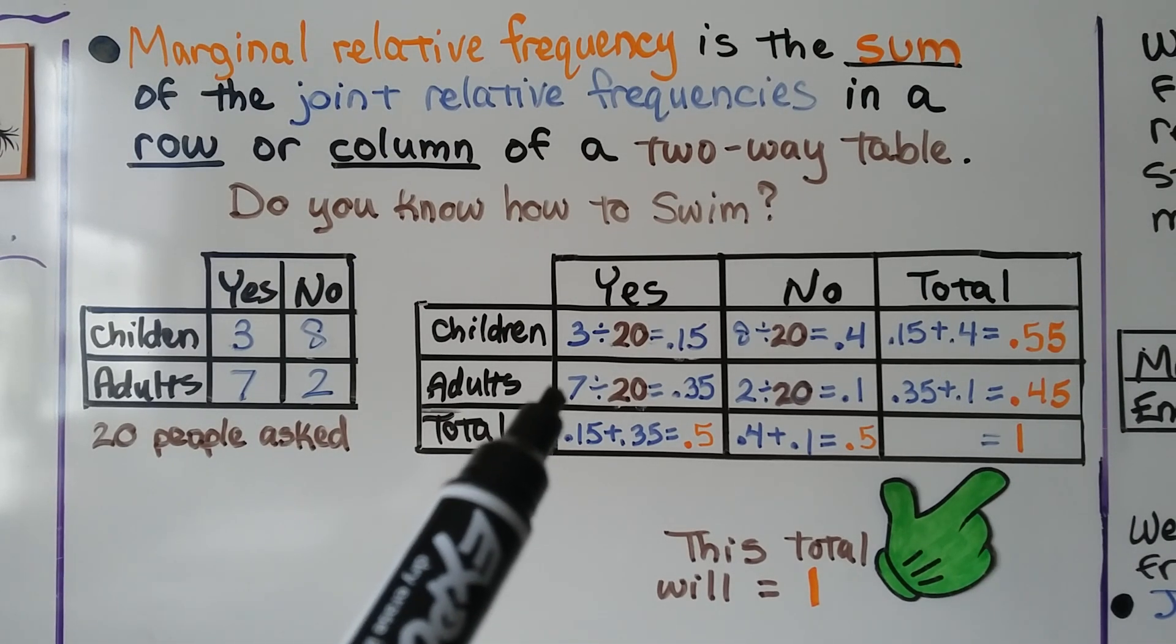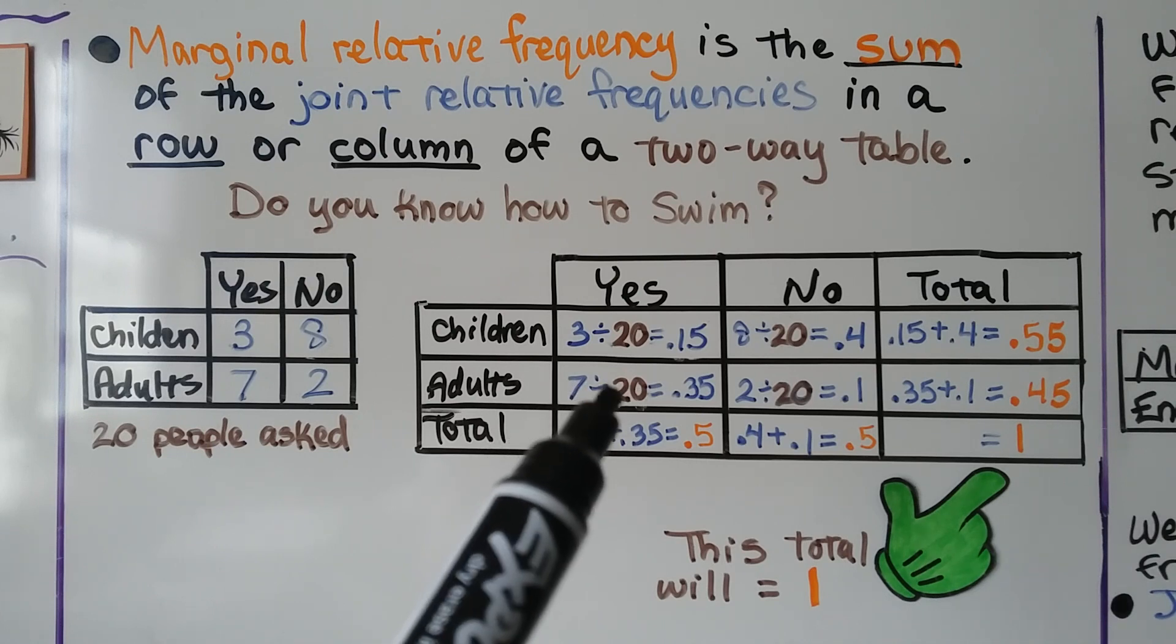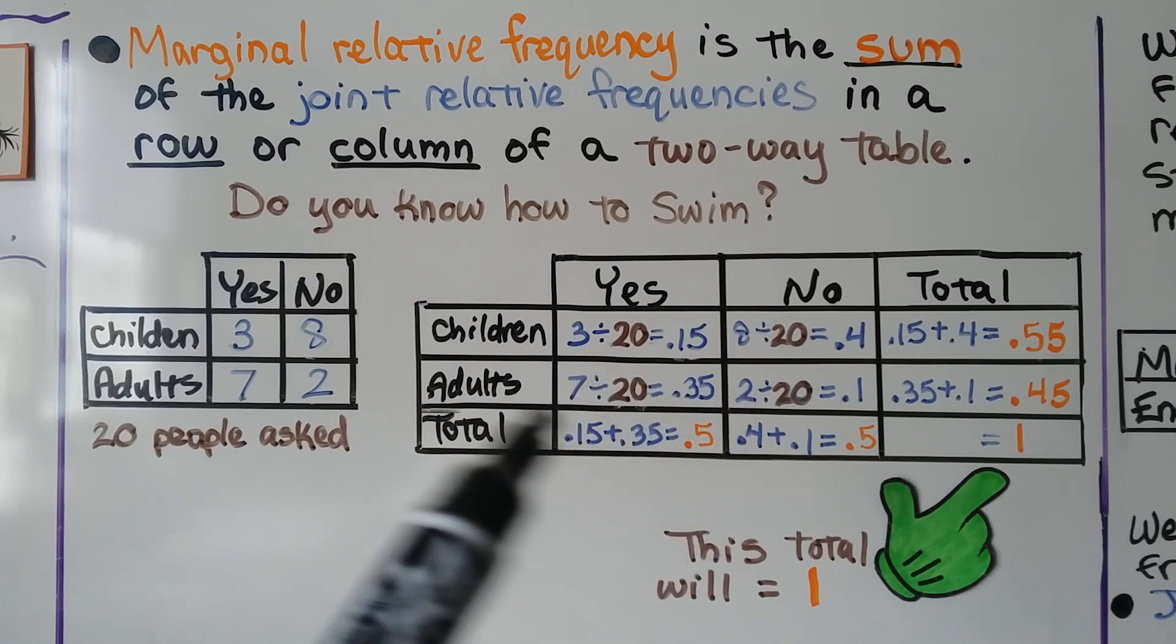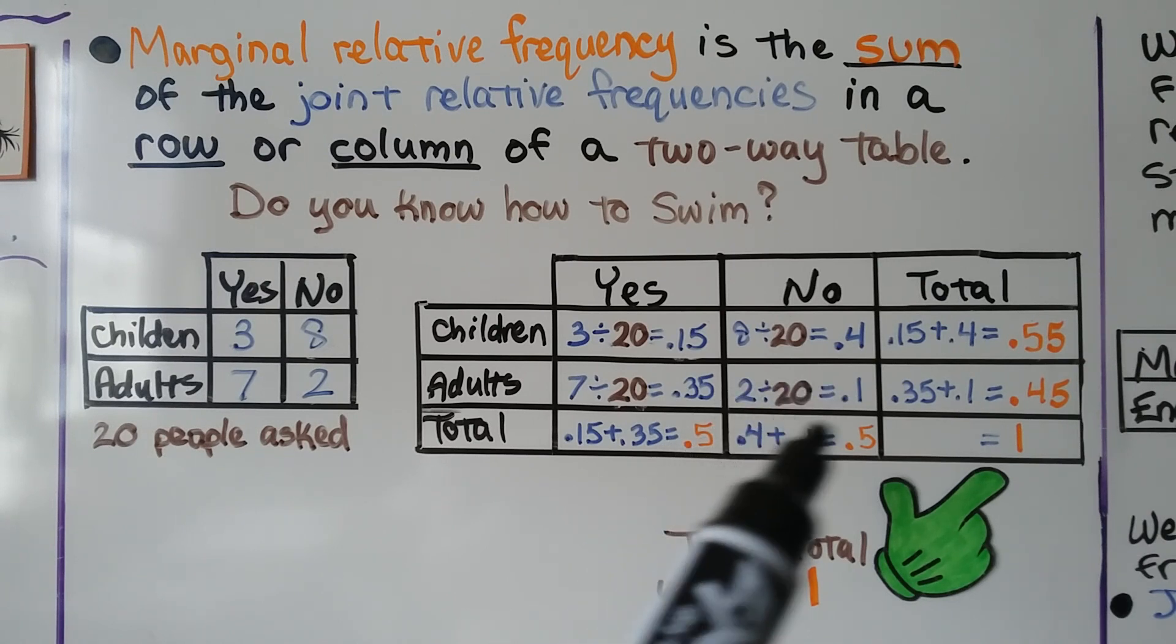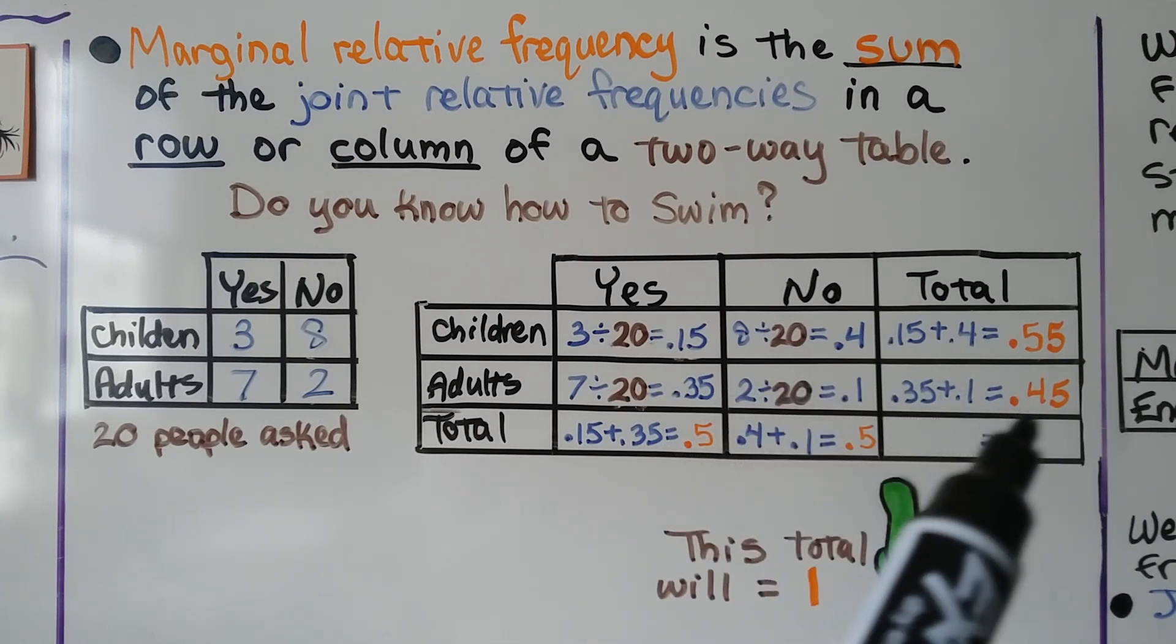For the adults we do seven-twentieths or seven divided by twenty, we get 0.35. For the no we do two divided by twenty or two-twentieths. That gives us 0.1. We add them together and get 0.45.